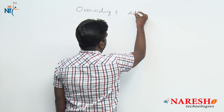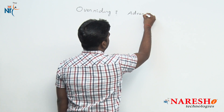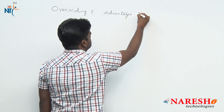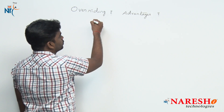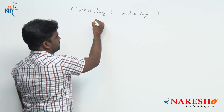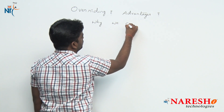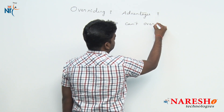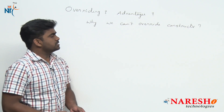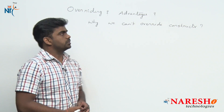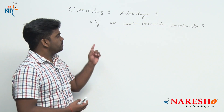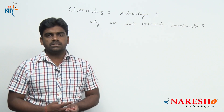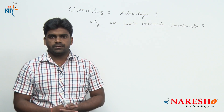First of all, what is overriding, its advantages or simply its use, and the next question: why we cannot override a constructor. Definitely they will ask questions about method overriding and special method overriding. Special method overriding means — what is the special method in Java? It is a constructor. We know this.